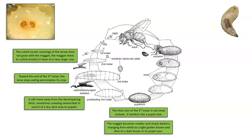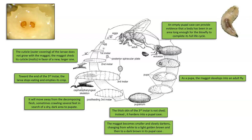The pupal case slowly darkens, changing from white to a light golden brown and then to a really dark brown. Once it is completely packed into the pupal case, it will continue to develop into an adult fly as a pupa. An empty pupal case can provide evidence that a body has been in an area long enough for the blowfly to complete its entire life cycle — a clear indication that it has been a while since the body was deposited in that location.